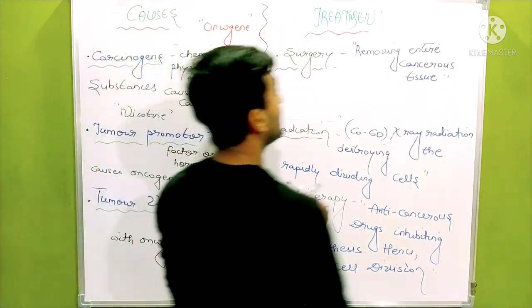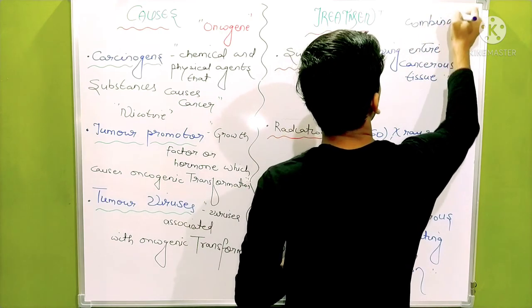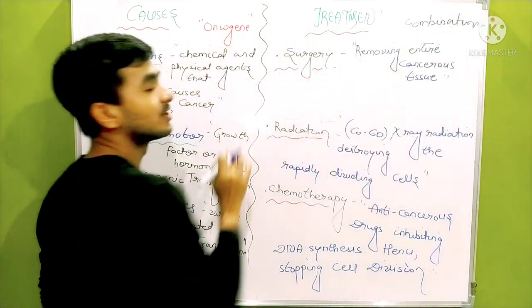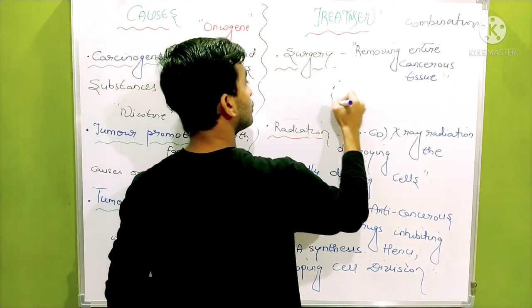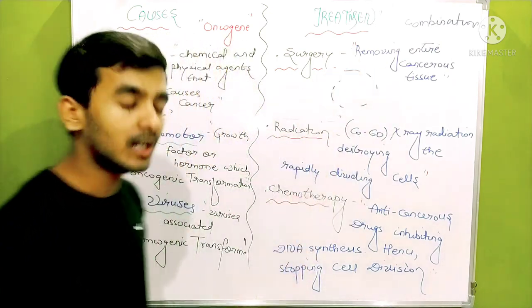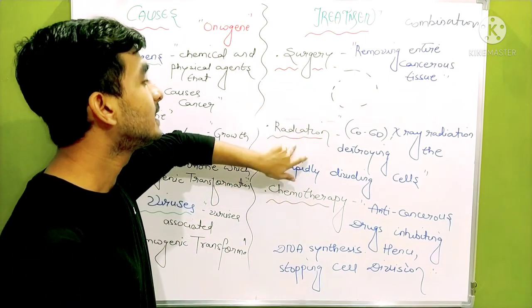Now let's go across the treatment. In treatment there is a combination of three processes: surgery, radiation, and chemotherapy. Surgery - the part where the tumor has been originated is first of all removed. That is called surgery.